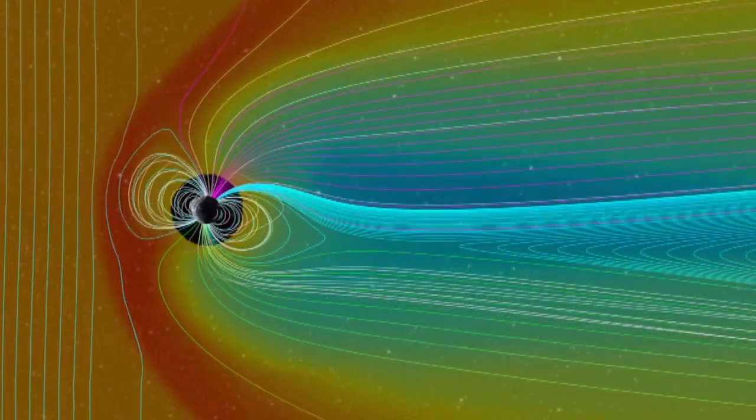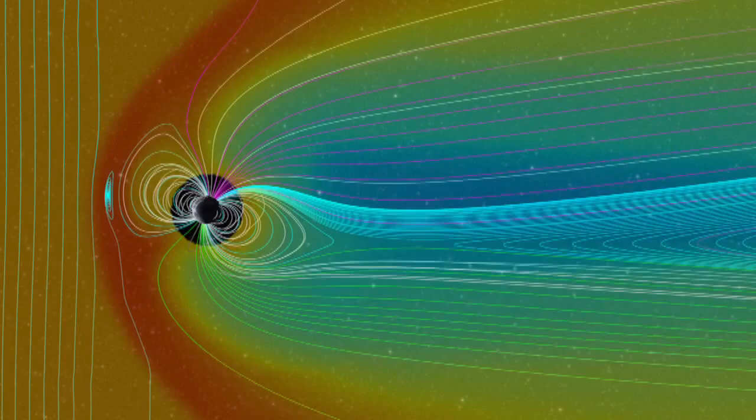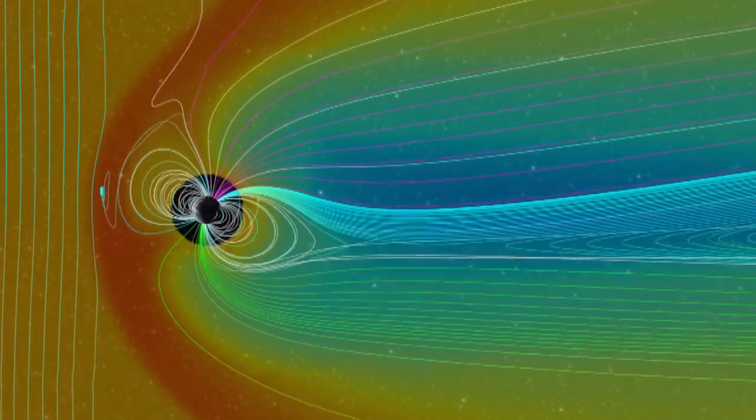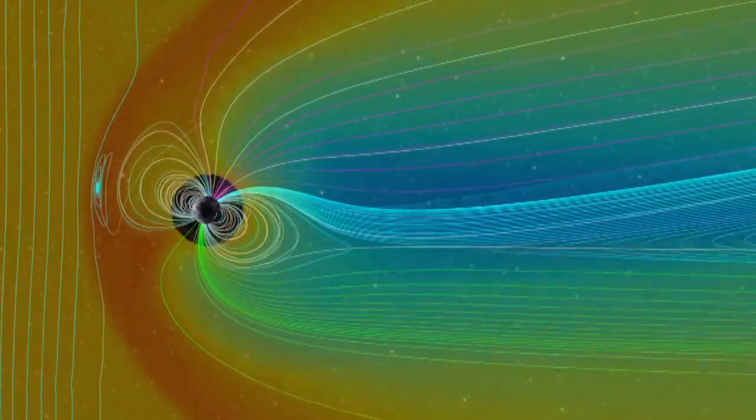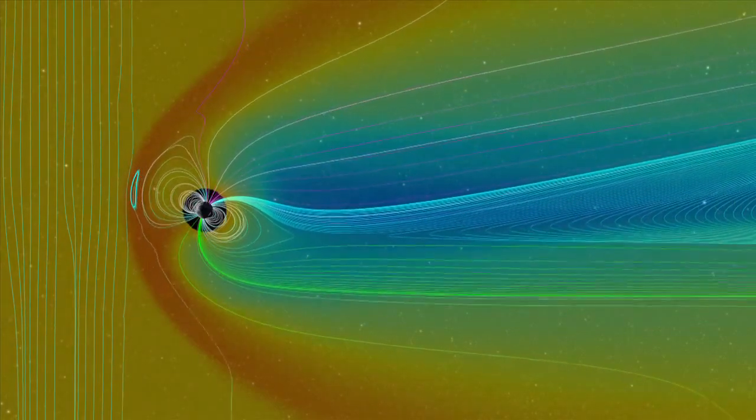But close to Earth, the magnetic field is largely unchanged. Earth is protected from the intense solar event. This is the case for a rather ordinary CME.